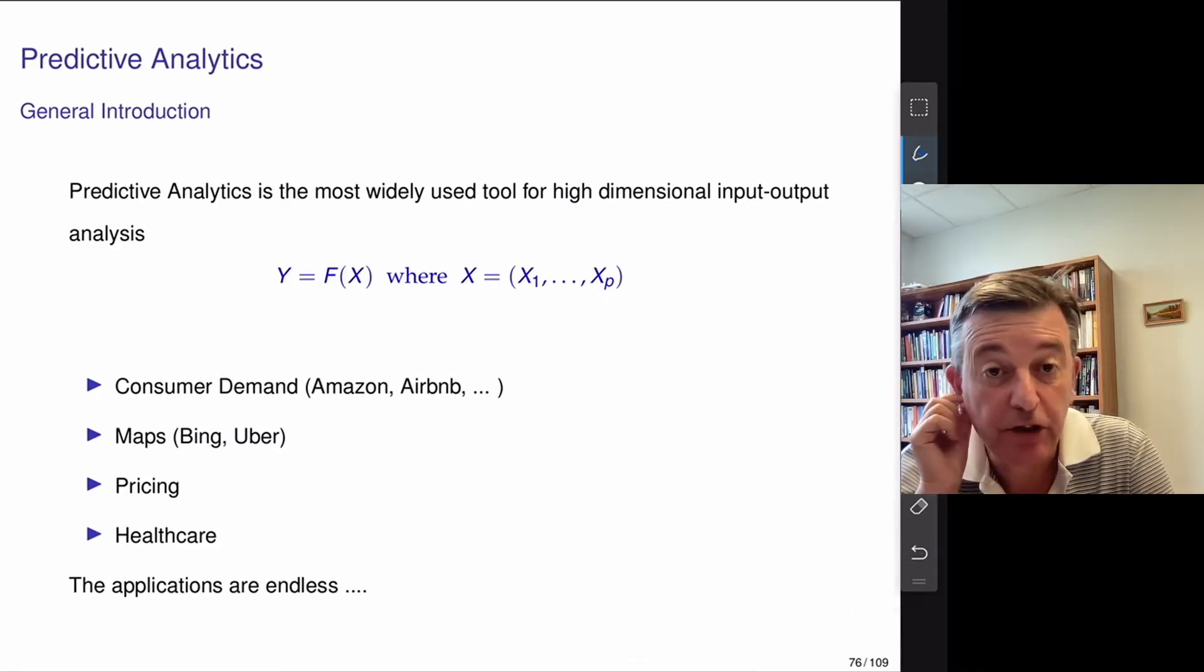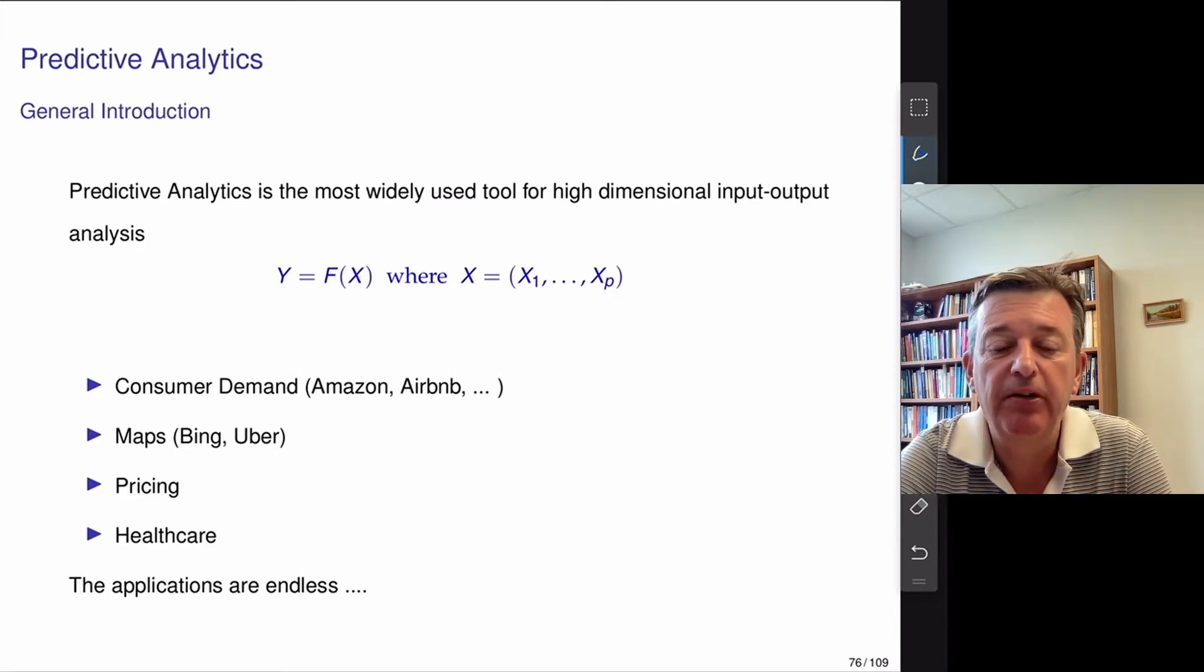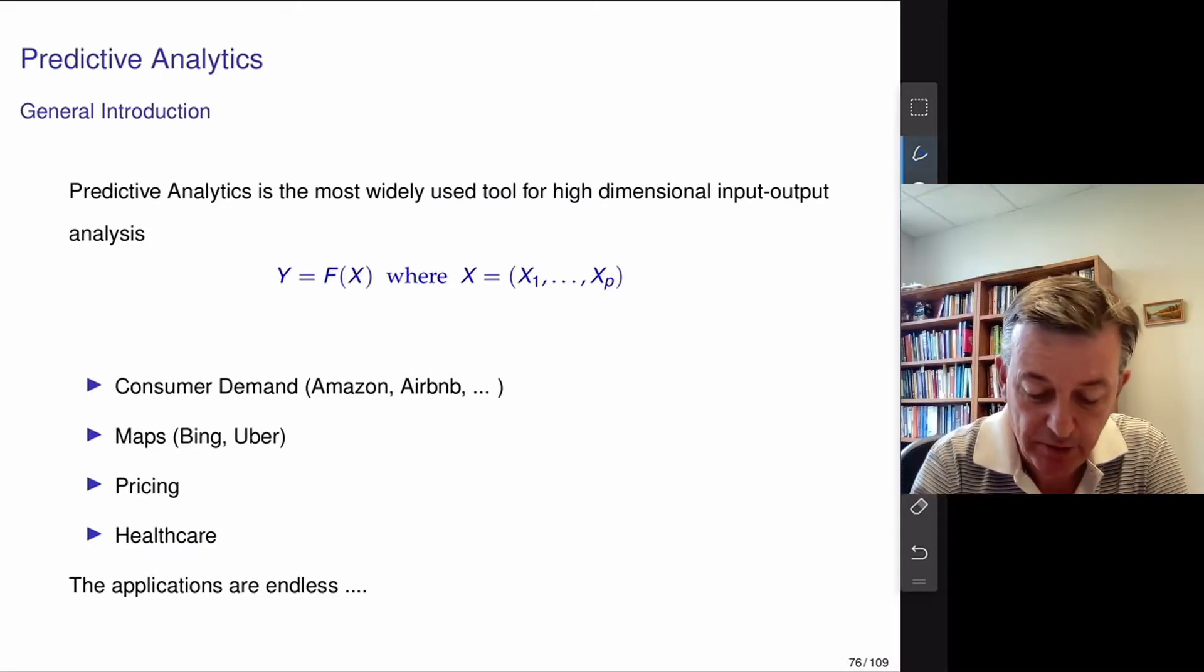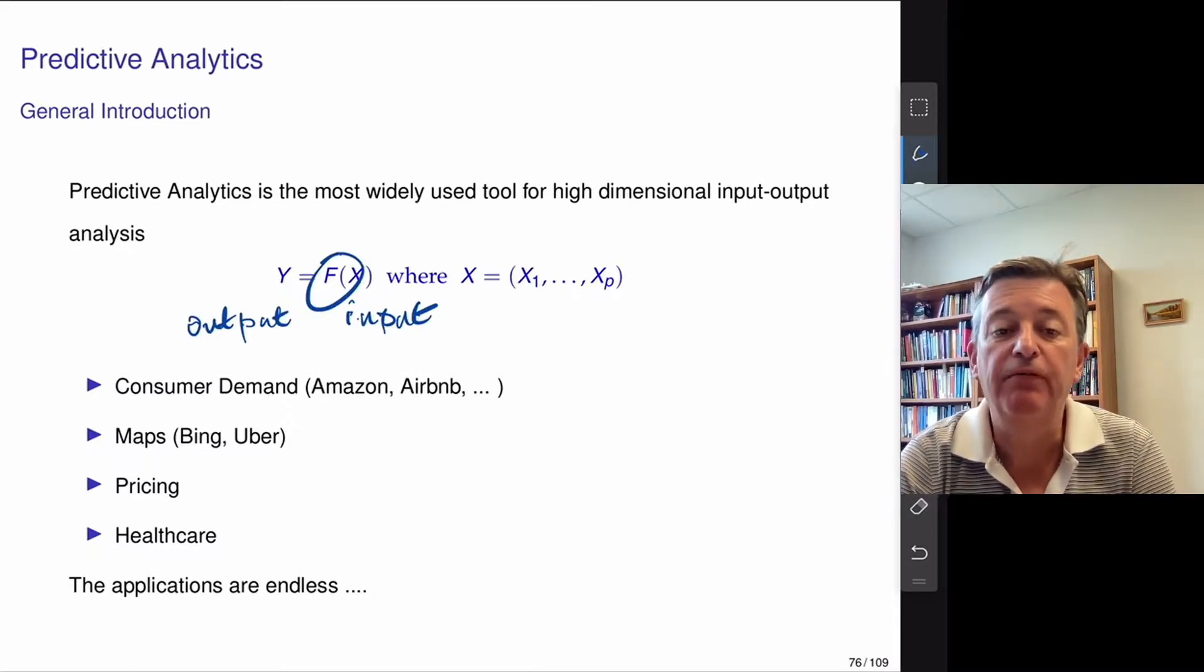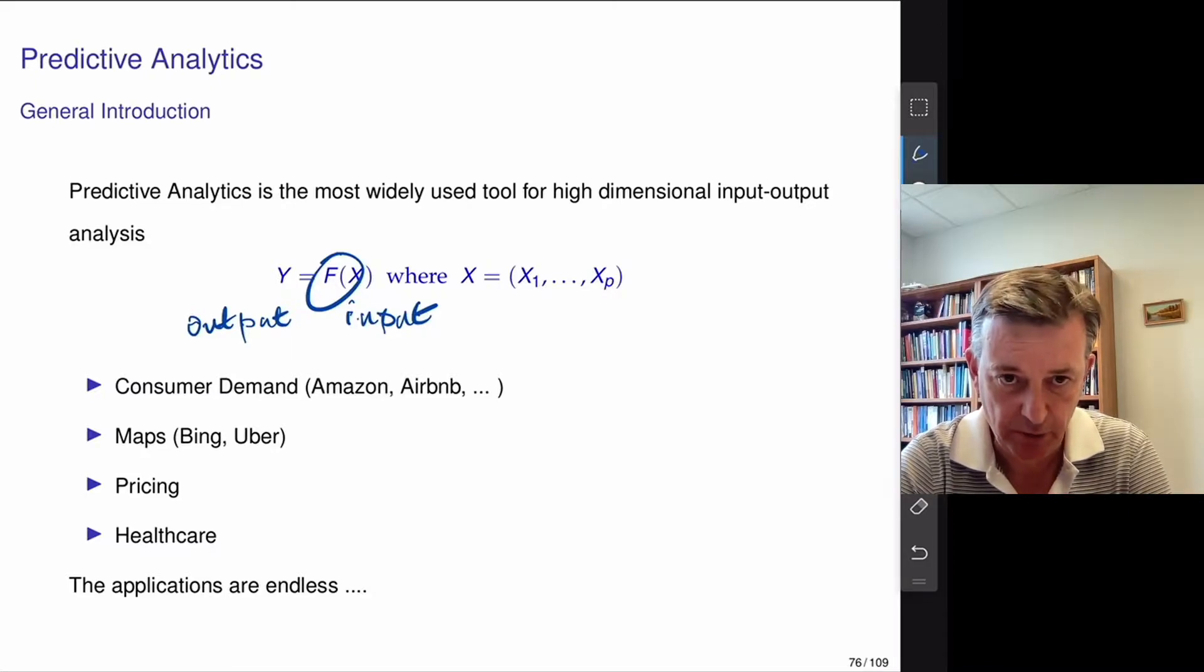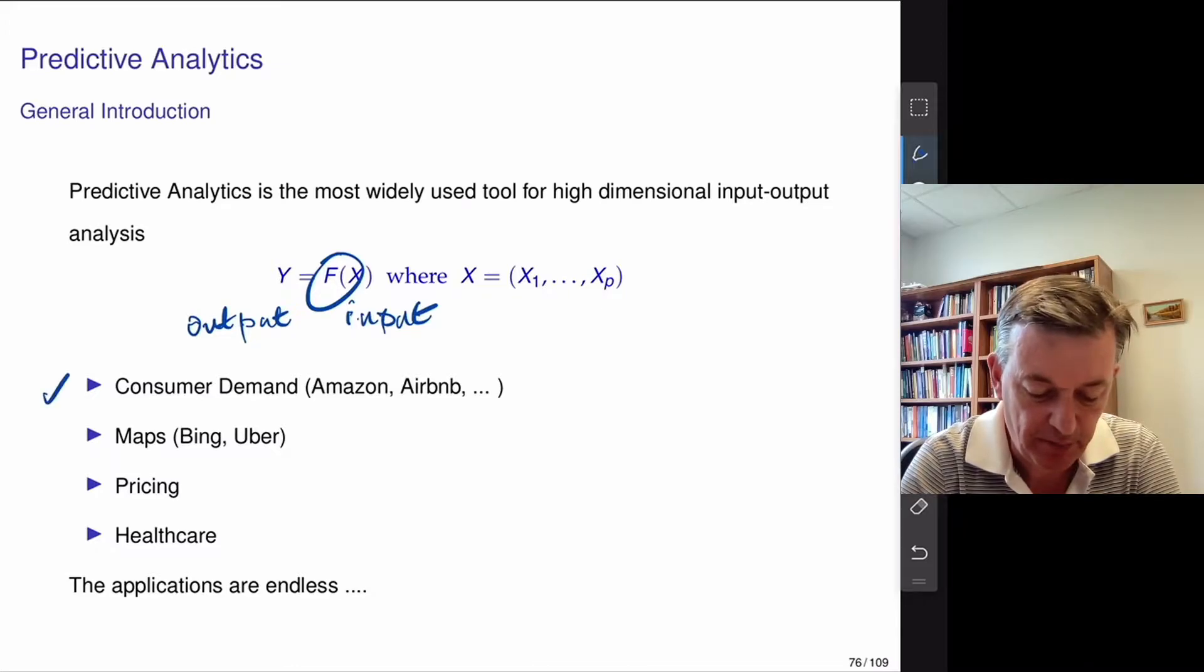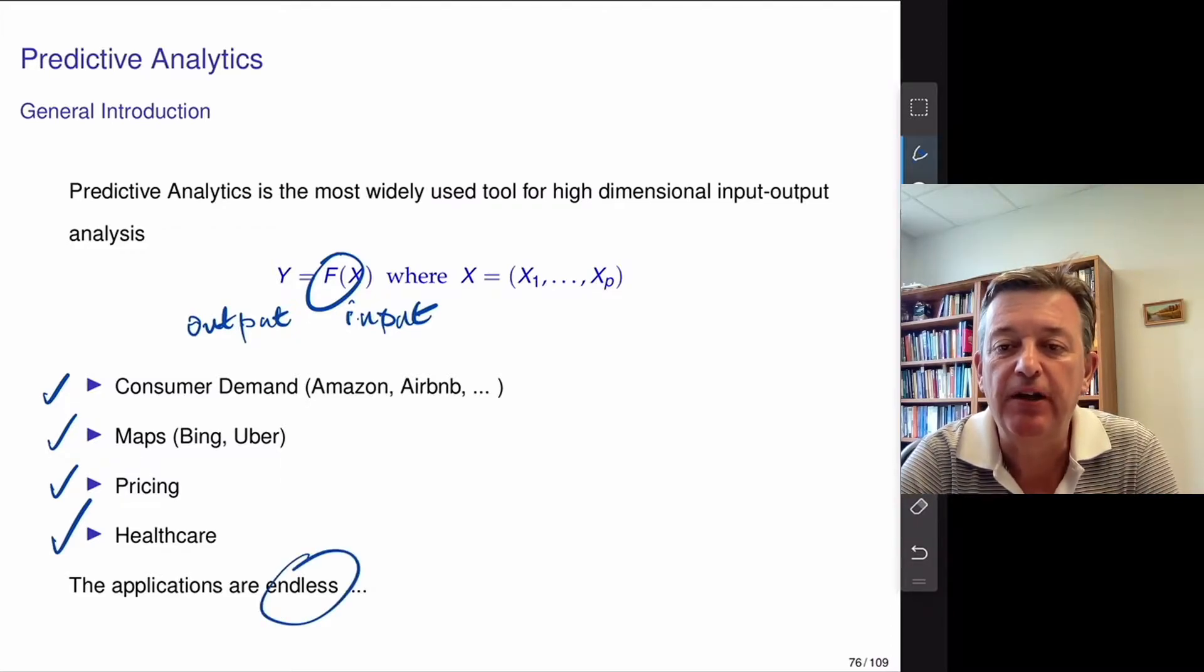So a quick general introduction about predictive analytics. We talked about multiple regression in the last segment. Here we're going to talk about logistic regression. Essentially I've got an input and an output. So x are my input variables, typically high dimensional. And I want to try and predict an output variable. And I do that by finding a function f that takes x to y. And there's a whole bunch of examples: Internet consumer demand, mapping problems, pricing problems, healthcare problems. And I think by now you realize that applications are endless.